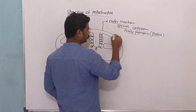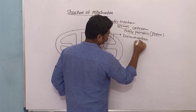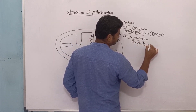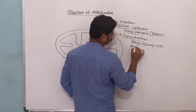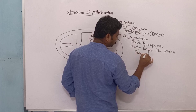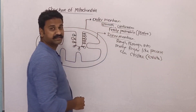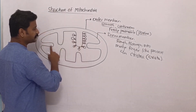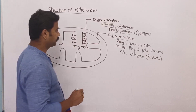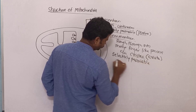The inner membrane of mitochondria is rough and thrown into many finger-like processes called crista (singular) or cristae (plural). This inner membrane is selectively permeable. So the outer membrane is freely permeable and the inner membrane is selectively permeable.